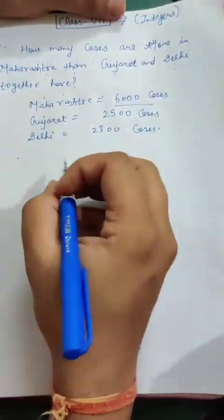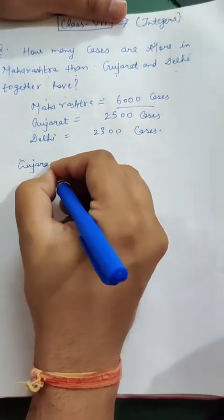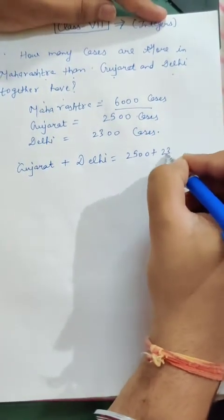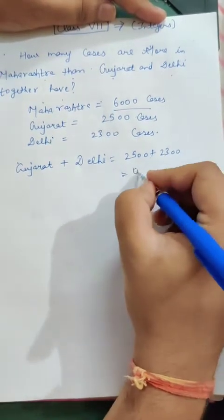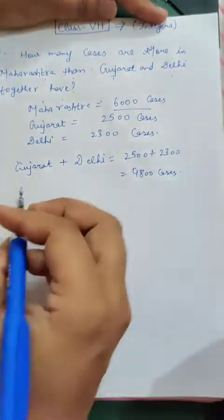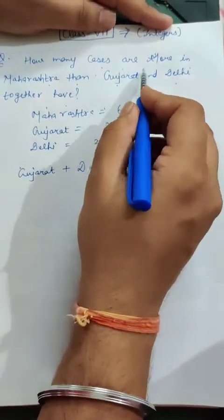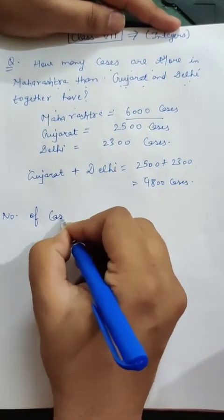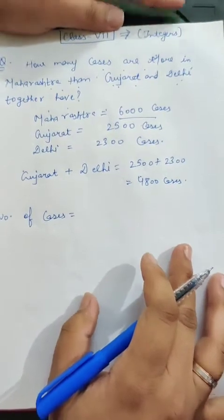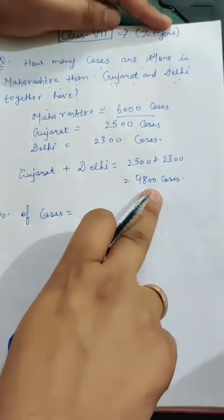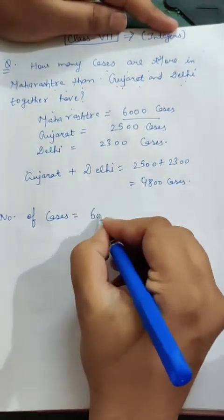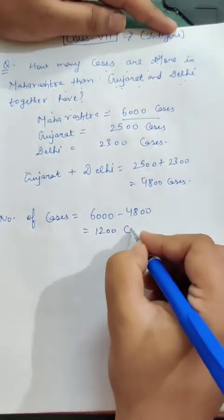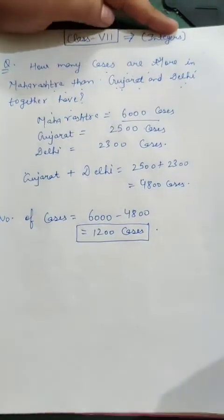Maharashtra is having 6,000 cases. Gujarat plus Delhi: 2,500 plus 2,300 equals 4,800 total cases. Now, how many cases are more in Maharashtra? We subtract: 6,000 minus 4,800 comes out to be 1,200 cases.